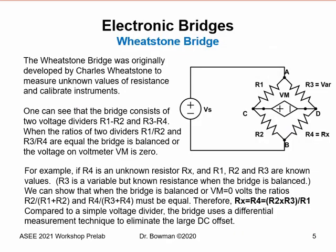Let's begin by looking at electronic bridges. In the early 1800s, the idea of a balancing or ratiometric bridge was discovered and developed by Charles Wheatstone to measure unknown values of resistance and calibrate instruments. You can see from the electronic diagram that the bridge consists of essentially two voltage dividers: R1, R2 and R3, R4. This bridge network has the interesting property that we can reach a point where there's no voltage difference between nodes C and D.